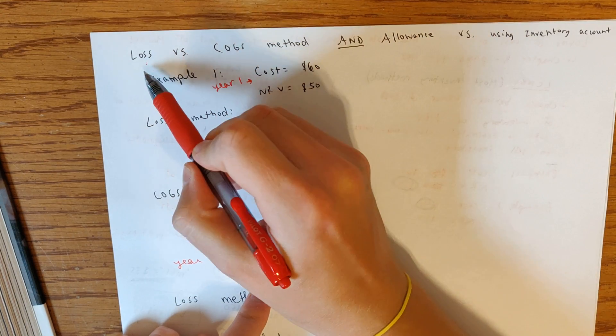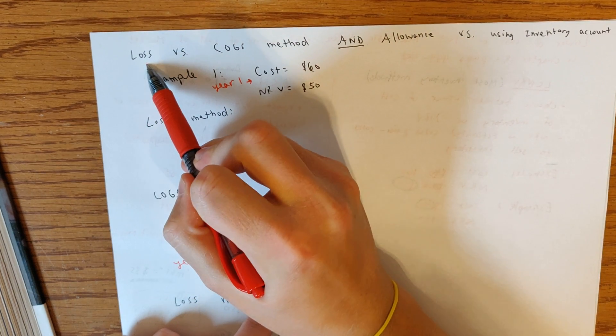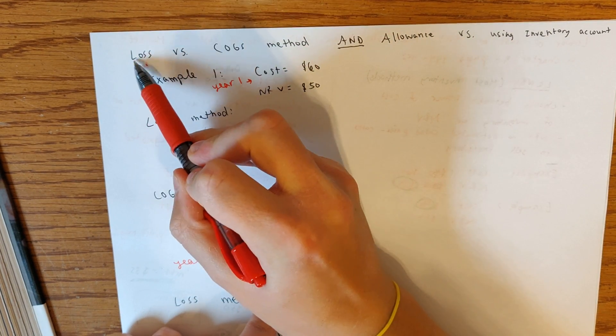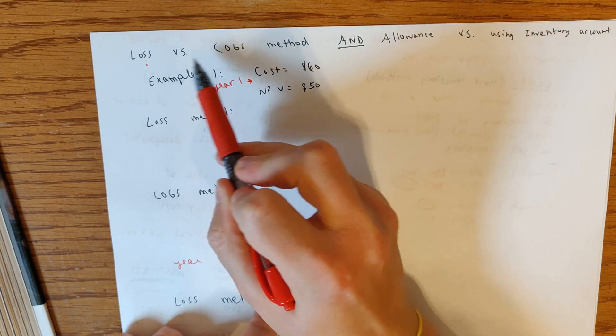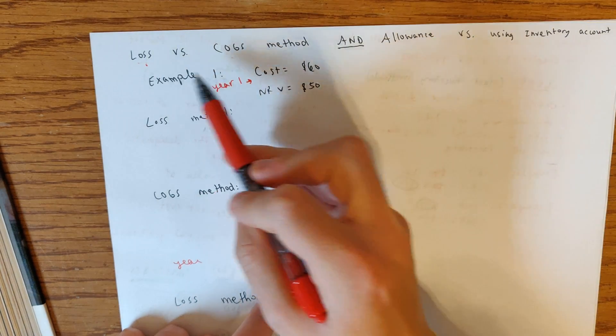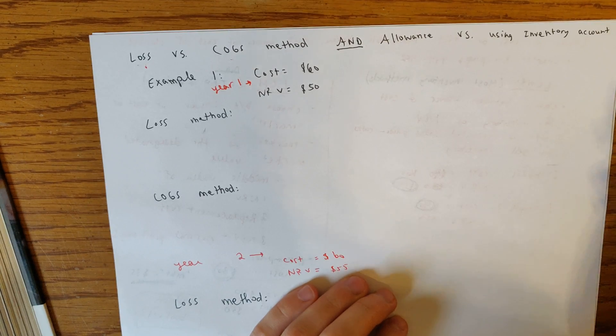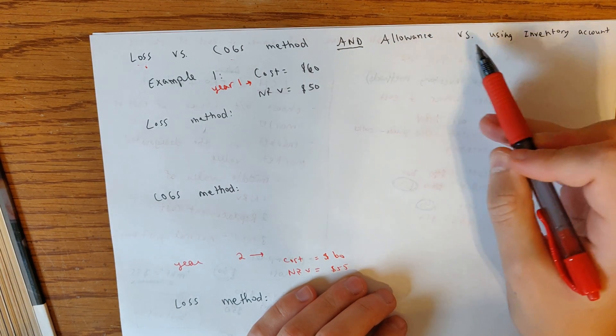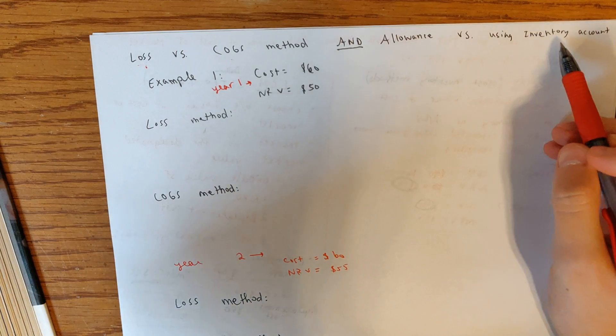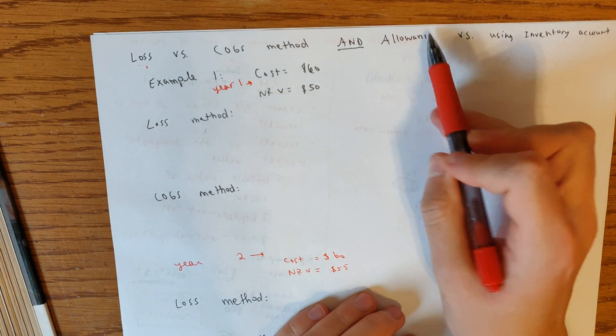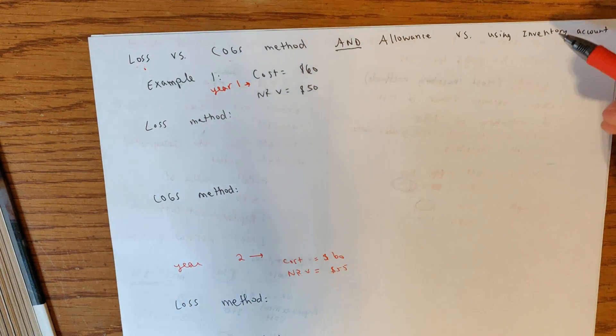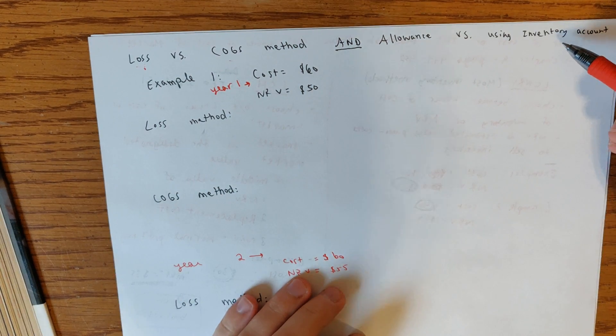What we're going to look at here is that there are these two methods that we discussed, and they are basically the loss method and the cost of goods sold method. There's two different methods for writing down the inventory. And then on the other side, we have the allowance versus using the inventory account, whether or not we're going to set up an allowance account or we're just going to write off the inventory directly to the inventory account.